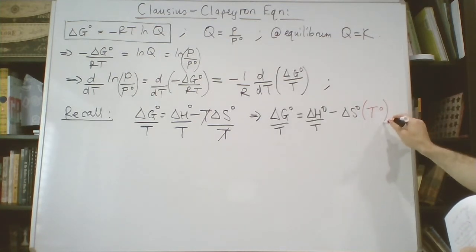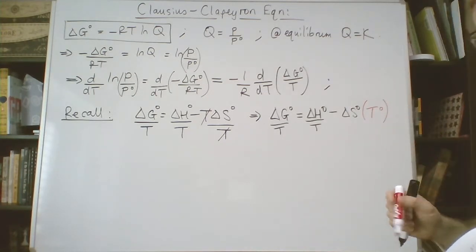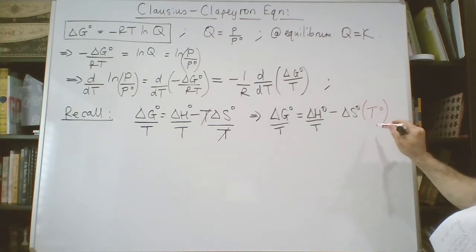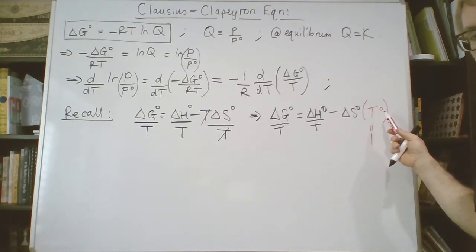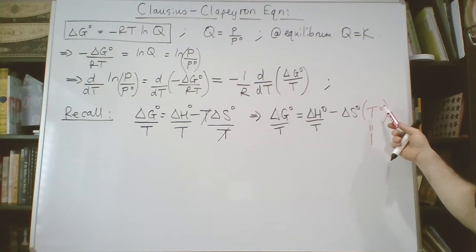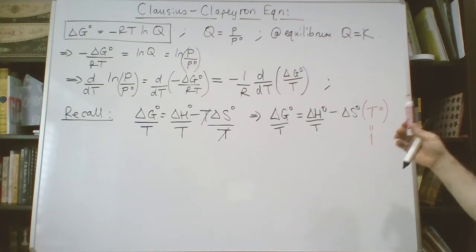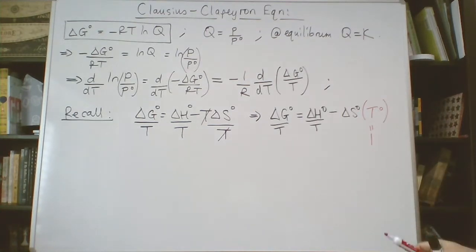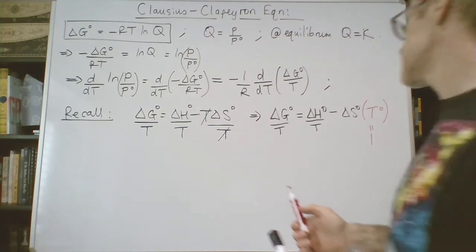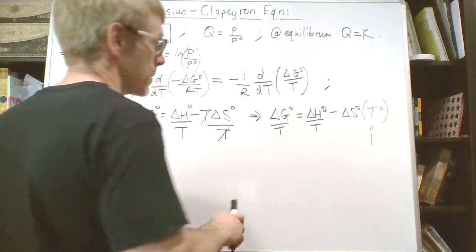So ΔG°/T = ΔH°/T - ΔS°, but now I've got no T term here, so I'm going to write T to the zeroth power. This is T^0 which we know equals one—anything to the zero equals one. I don't mean T standard here. It's very easy to skip through this and think it's T standard. If you actually watch all of the video, you'll see this comment that this is T to the zeroth power.